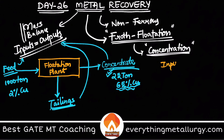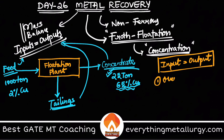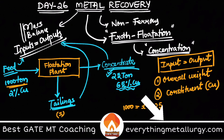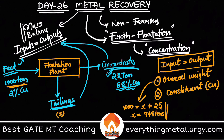We know inputs must equal outputs. You can do this in two ways: number one, the overall weights, and number two, for a particular constituent. For overall weight balance: 1000 tons of feed equals x tons of tailings plus 25 tons of concentrate. So x equals 975 tons of tailings. This is the overall weight balance.